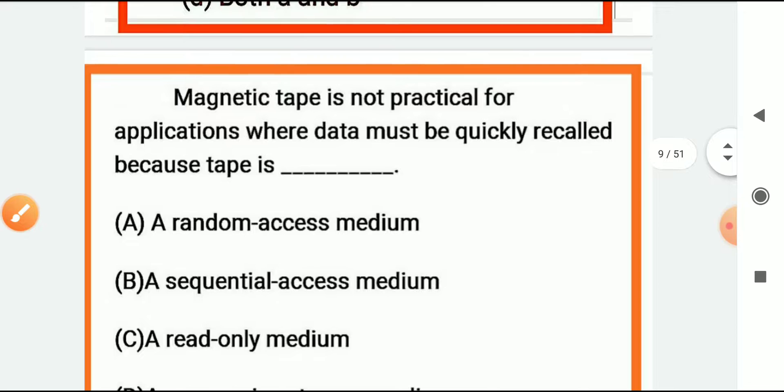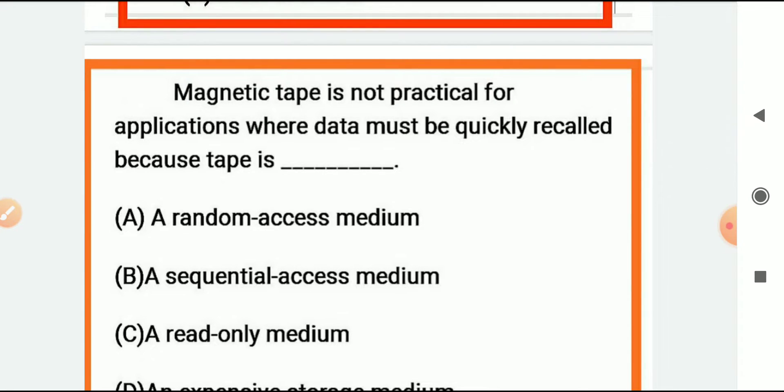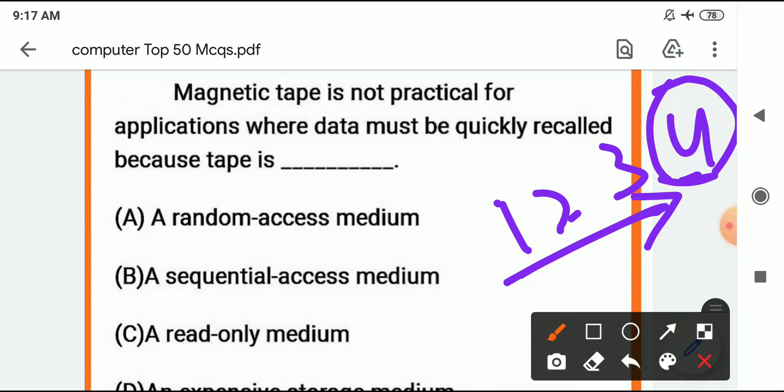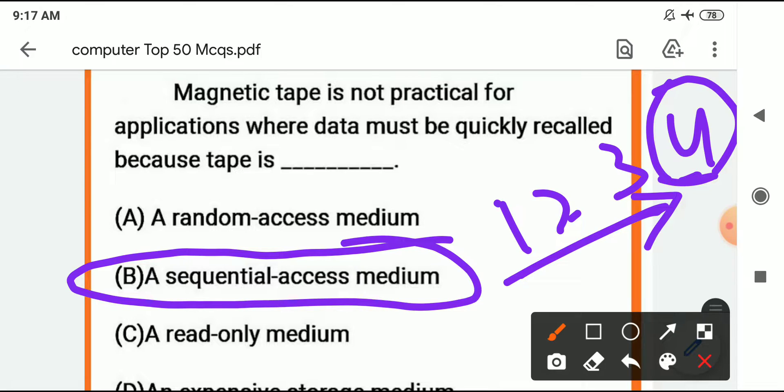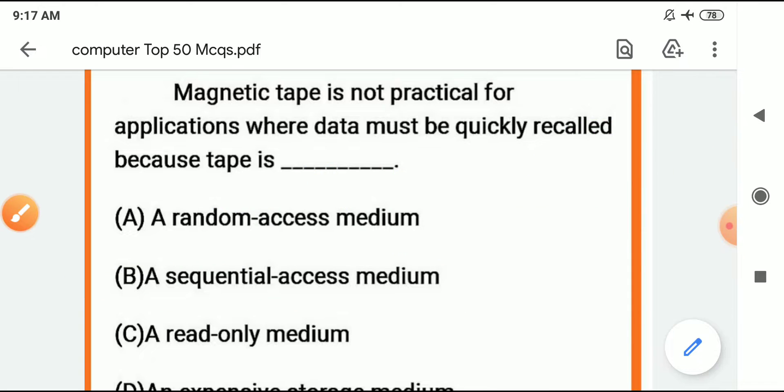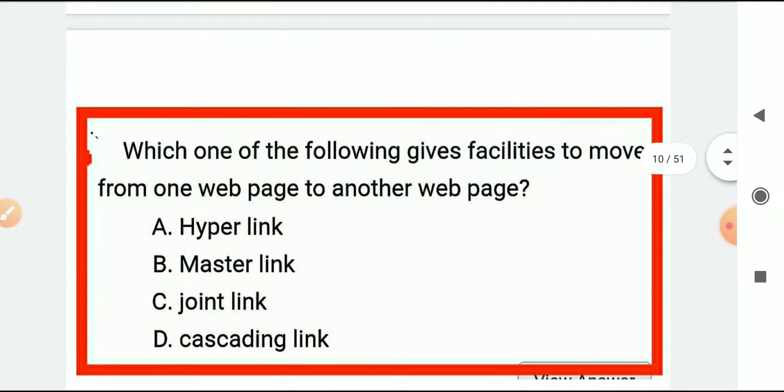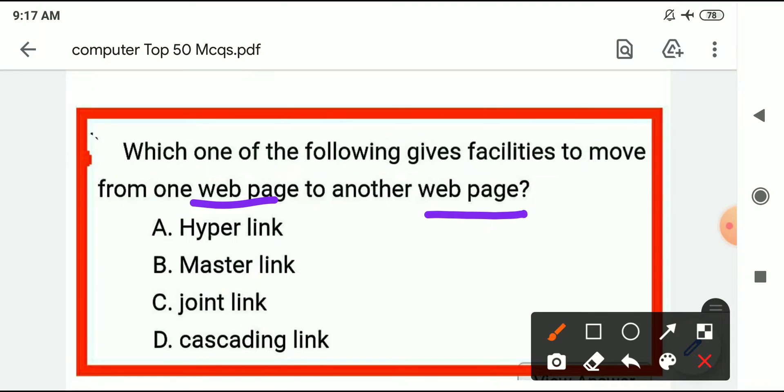Magnetic tape is not practical for application where data must be quickly recalled because in the magnetic tape we don't recall any data quickly. If we want to listen to a song, we don't listen directly to the 4th song, we have to go in sequence. Because in the magnetic tape there is sequential access medium. The rest of the memory can go directly - we call it random access. Which one of the following gives facilities to move from one web page to another? That is with the help of hyperlink.